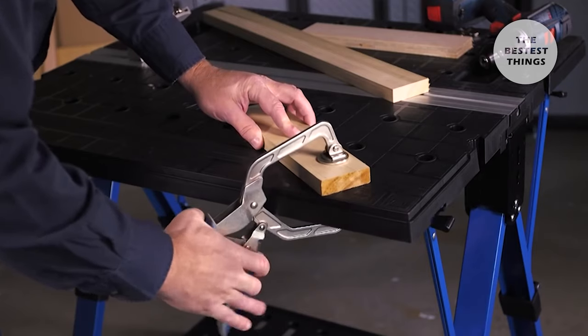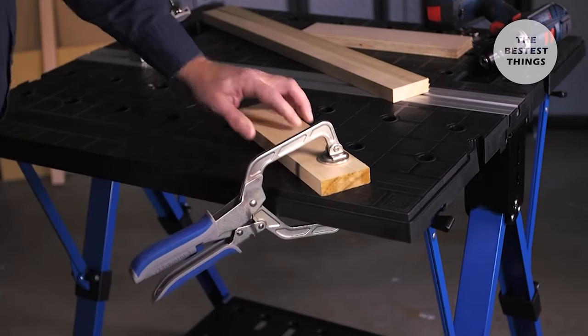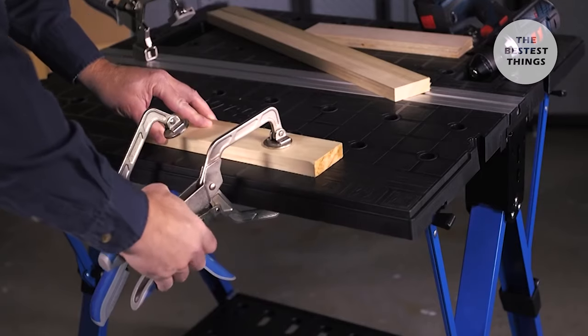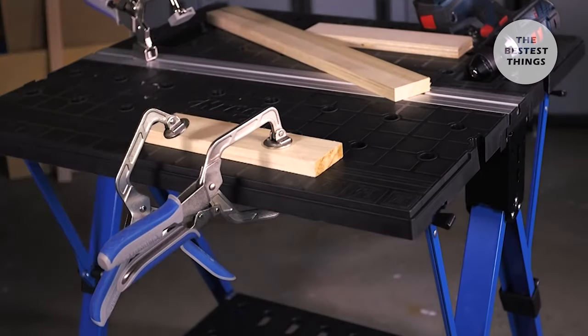For additional hold-down clamping versatility, the Mobile Project Center also can accept a Craig Wood Project Clamp. Slide the clamp pad into a channel under the table, and then position the clamp wherever you need it.